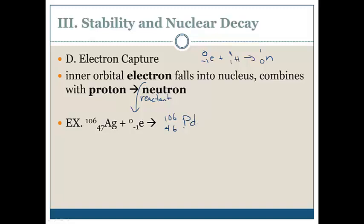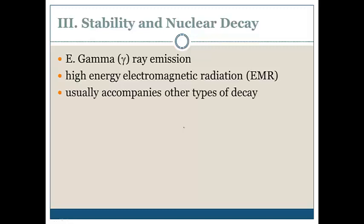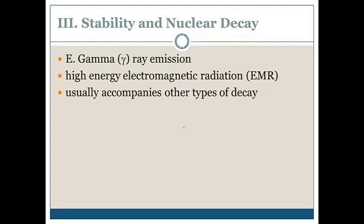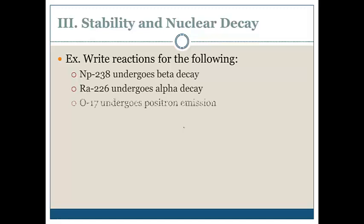Gamma ray emission. High energy electromagnetic radiation. When we talked about light, remember gamma rays is a type of photon. Usually accompanies other types of decay. Rarely are you going to get it by itself. So write the reactions for these: Neptunium-238 undergoes beta decay. Radium-226 undergoes alpha decay. And oxygen-17 undergoes positron decay. Try these on your own and we'll go over them in class.